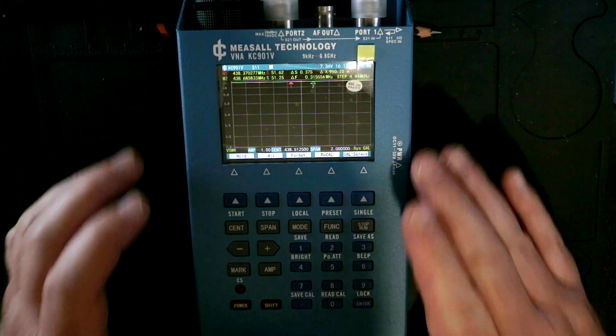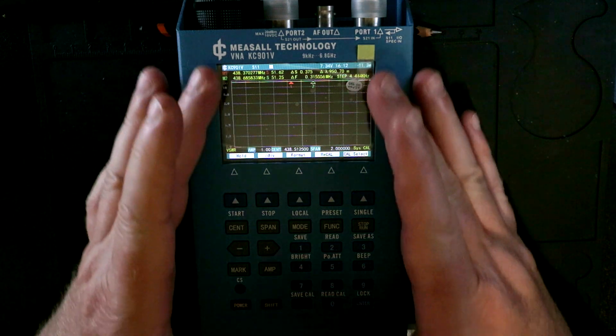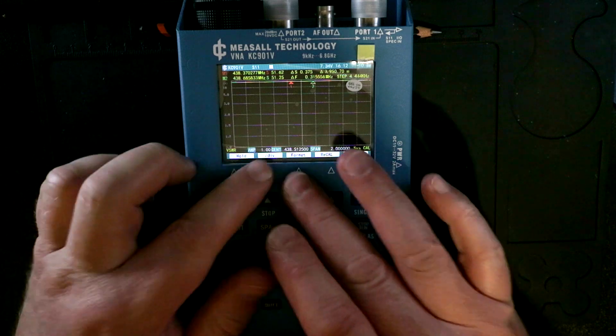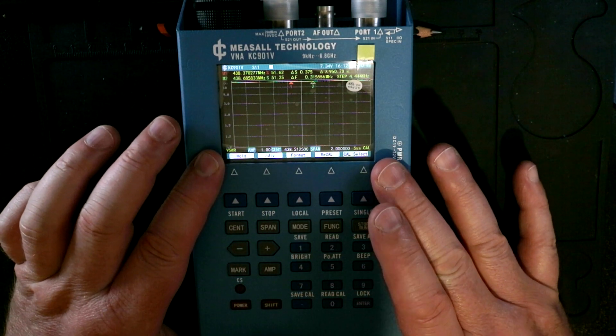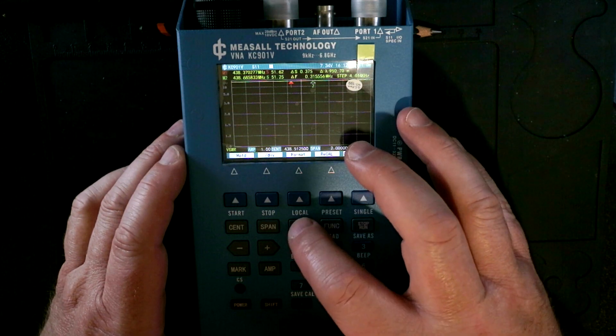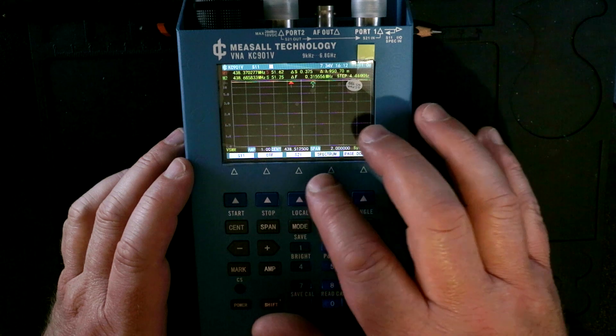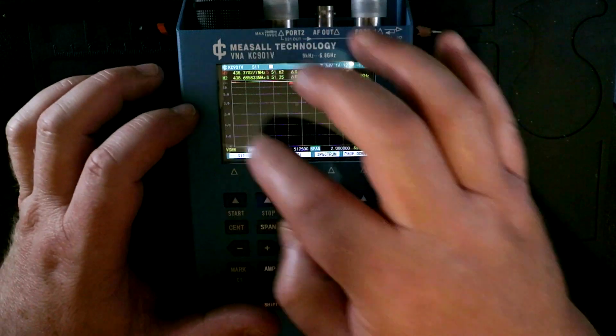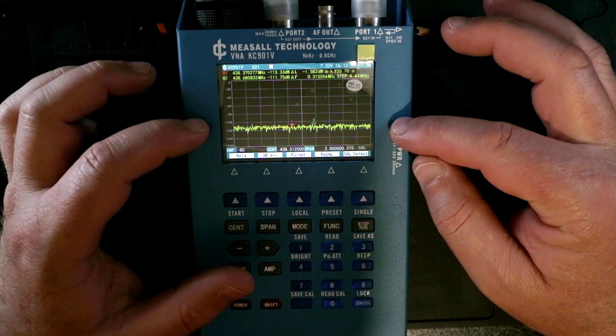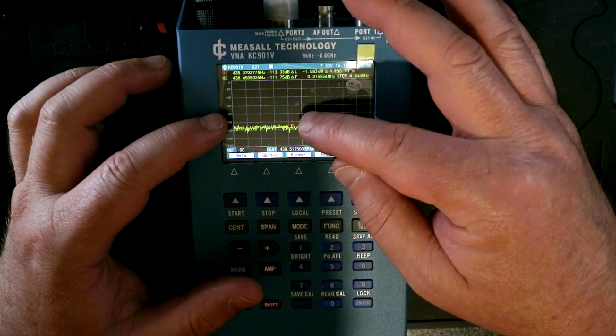The basics of it are you need to set a center frequency here, and that center frequency is what sits in the screen. You then need to set the span, and that gives you the width of the screen. Then you need to set the mode. S21 is the one I use to test the filter. This will give you basically a spectrum analyzer kind of display, and where the dips are you'll see the actual drop down.